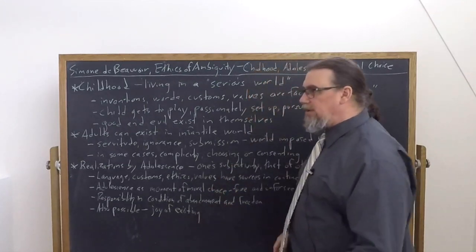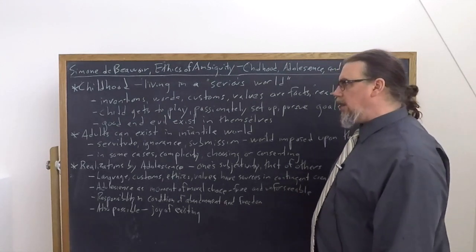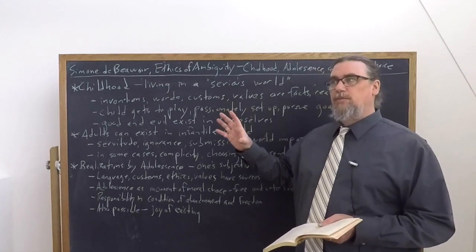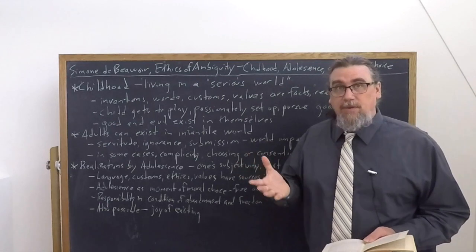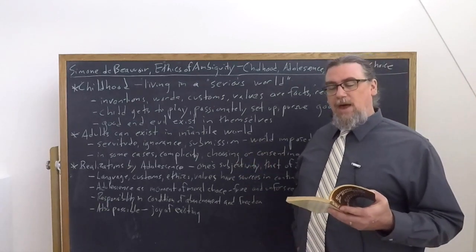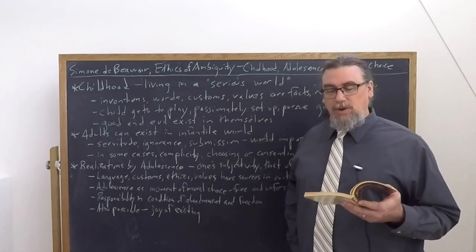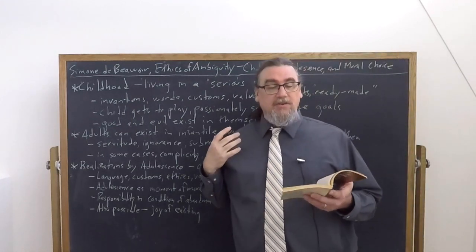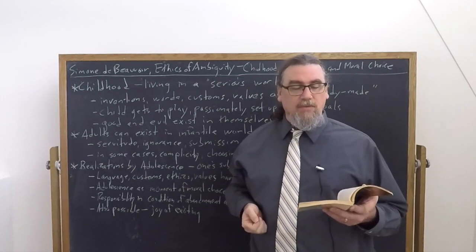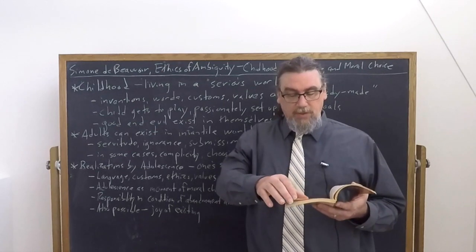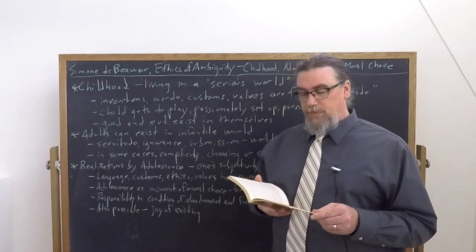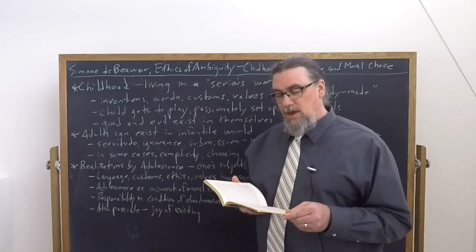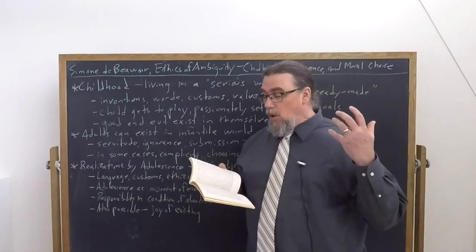She then discusses adults who live within an infantile world. She says there are beings whose life slips by in an infantile world because having been kept in a state of servitude and ignorance, they have no means of breaking the ceiling stretched over their head. Like the child, they can exercise their freedom, but only within this universe which has been set up before them without them.